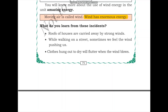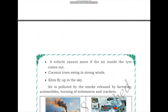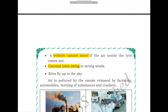Now let us look at these incidents. Roofs of houses are carried away by strong winds — you may have seen in videos how strong winds carry away roofs or even trees. Sometimes when walking on the street, very strong winds might push us. Clothes hung out to dry will flutter when the wind blows. When there is a puncture in a tire, the vehicle cannot move. Coconut trees swing in strong winds, and when flying kites you can feel the wind lifting the kite into the air.